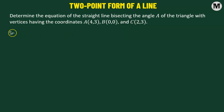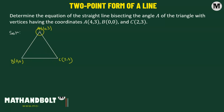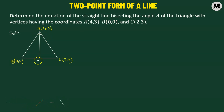Now let's begin. We'll try to understand the problem graphically first. We have a triangle ABC, the coordinates of the vertices are given to us. We need to find out the equation of the straight line which is bisecting the angle A, meaning we need to find out the equation of AD, where AD is bisecting angle A, or you can say angle BAD equals angle CAD.